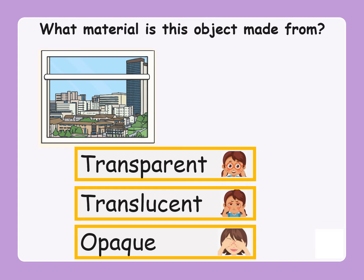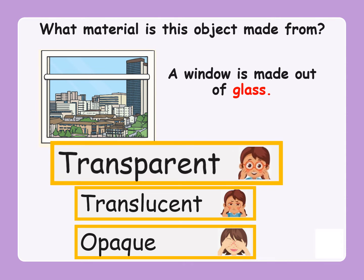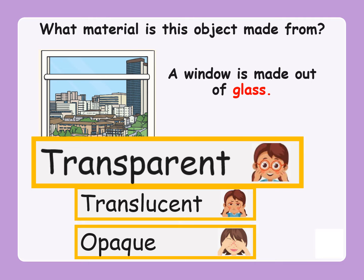Now I have a picture on your screen. Can you tell me what material this object is made from? This object is a window and the window is made out of glass. Have a think — is the material glass transparent, which means it lets light through? Is it translucent, which means it lets a little bit of light through? Or is it opaque, which means it does not let light through? Which word can you use to describe that material? Glass is transparent because it does let light through.